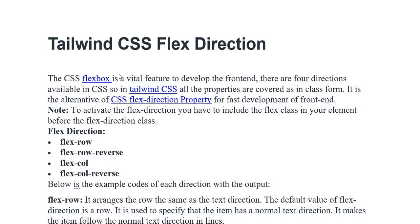Assalamu alaikum everyone. Today's video I have discussed Tailwind CSS Flex Direction. The CSS Flexbox is a vital feature to develop the frontend. There are four directions available in Tailwind CSS, and all the properties are covered in class form. It is the alternative of the CSS Flex Direction property for fast development of frontend.